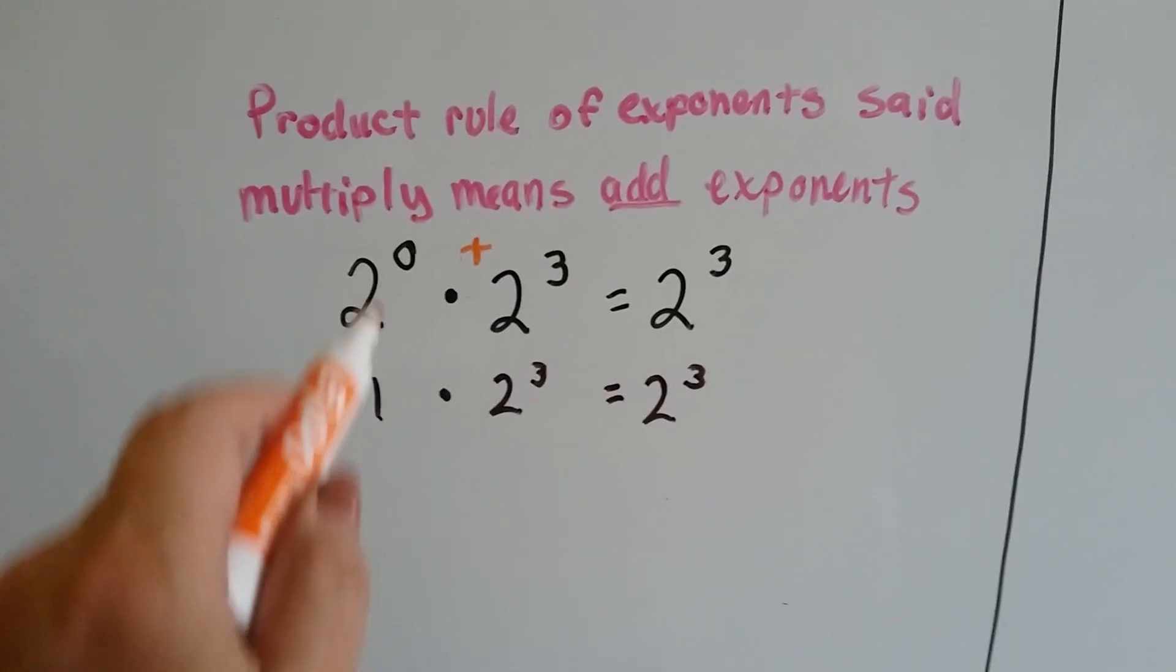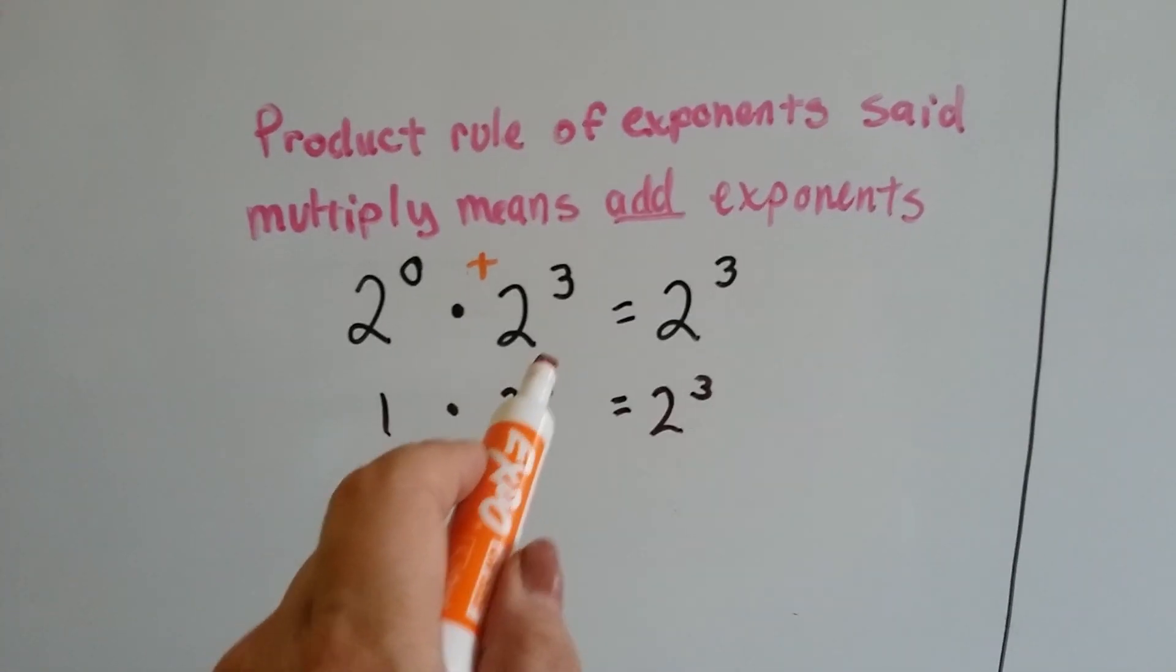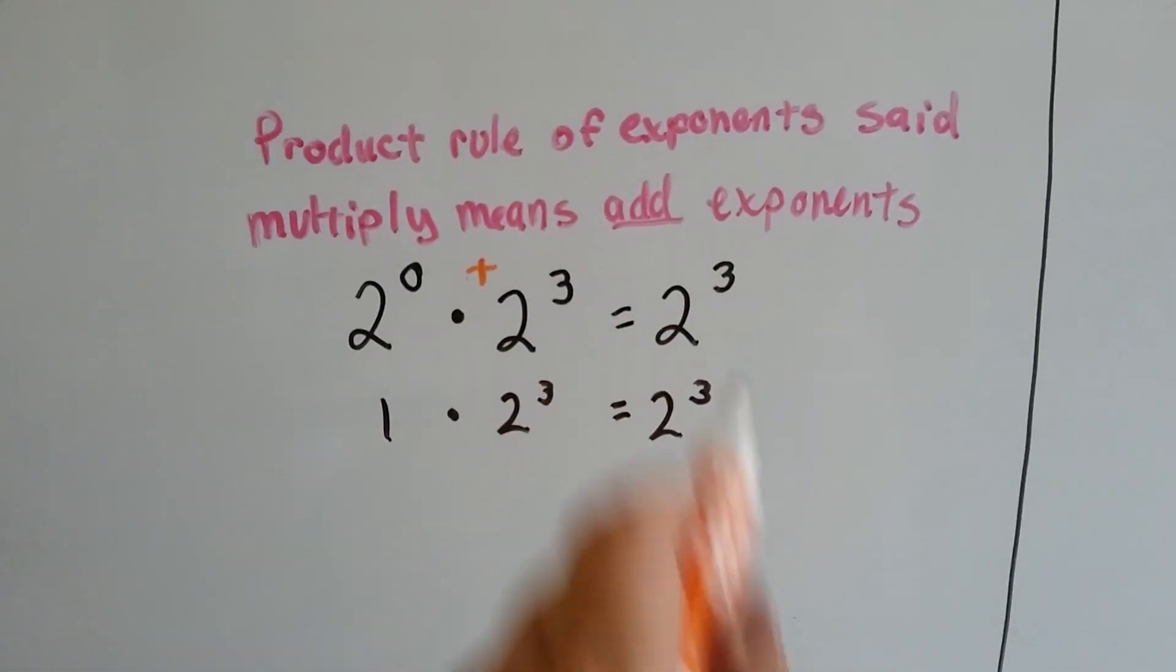It's the same thing as saying 1, because 2 to the zero power is 1, 1 times 2 to the third power is 2 to the third power. It's just going to be 2 to the third power.